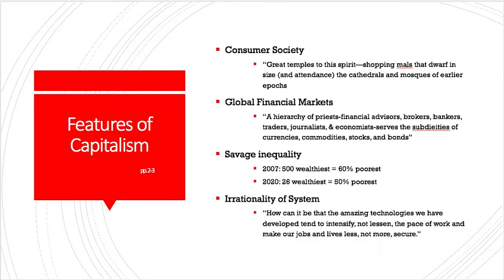If we're going to look at capitalism, we really want to understand what capitalism is. David provides four features of capitalism: consumer society, global financial markets, savage inequality, and the irrationality of the system. When we talk about consumer society, it's the idea that society is based around consumption — that we spend most of our lives consuming things, and in fact our lives in the modern world must be focused on consumption, partly because that's how we satisfy our basic needs. David says that the great temples to the spirit — shopping malls — dwarf in size and attendance the cathedrals and mosques of earlier epochs. This really captures a very religious element of consumerism today; it has become a cult.